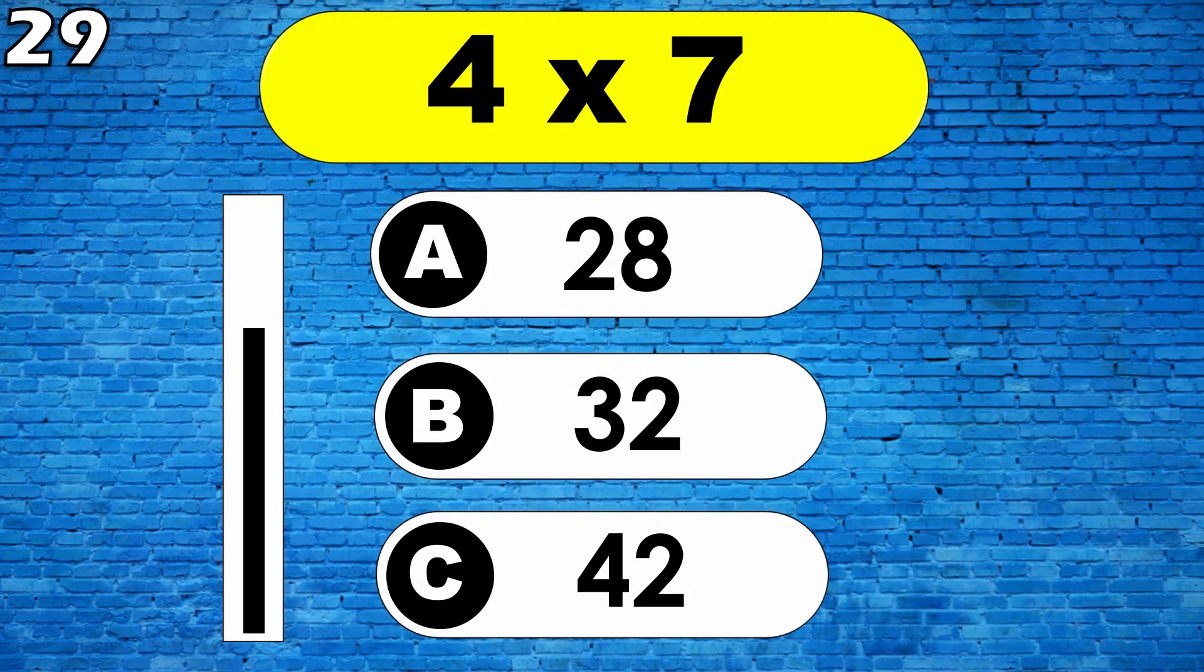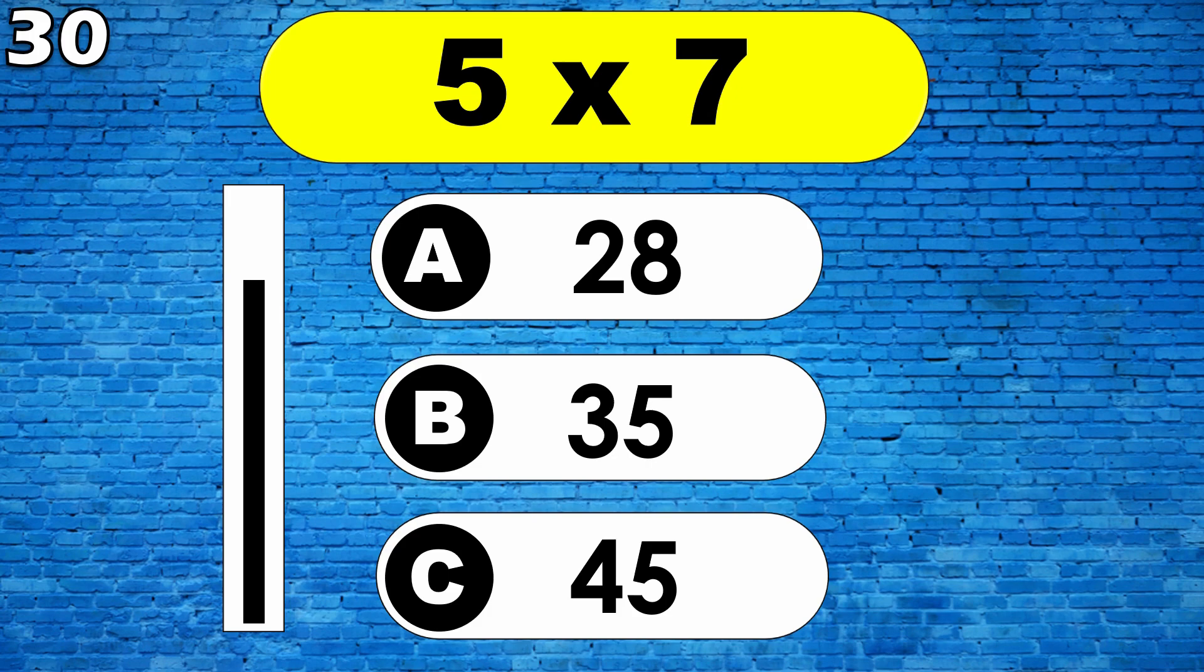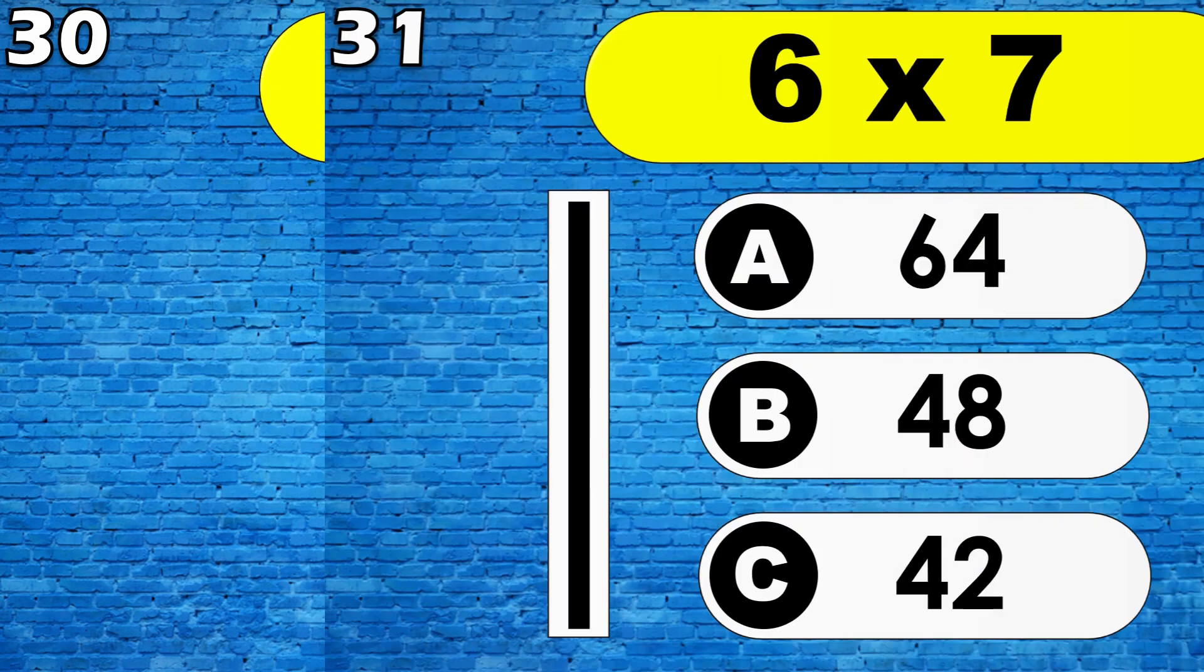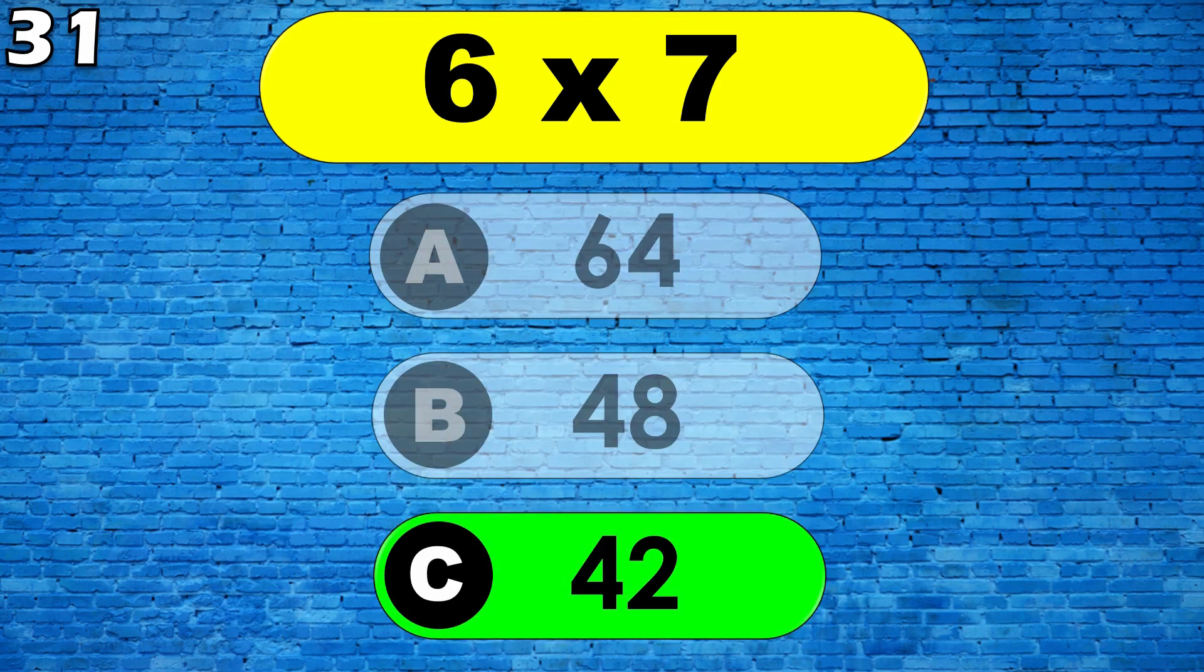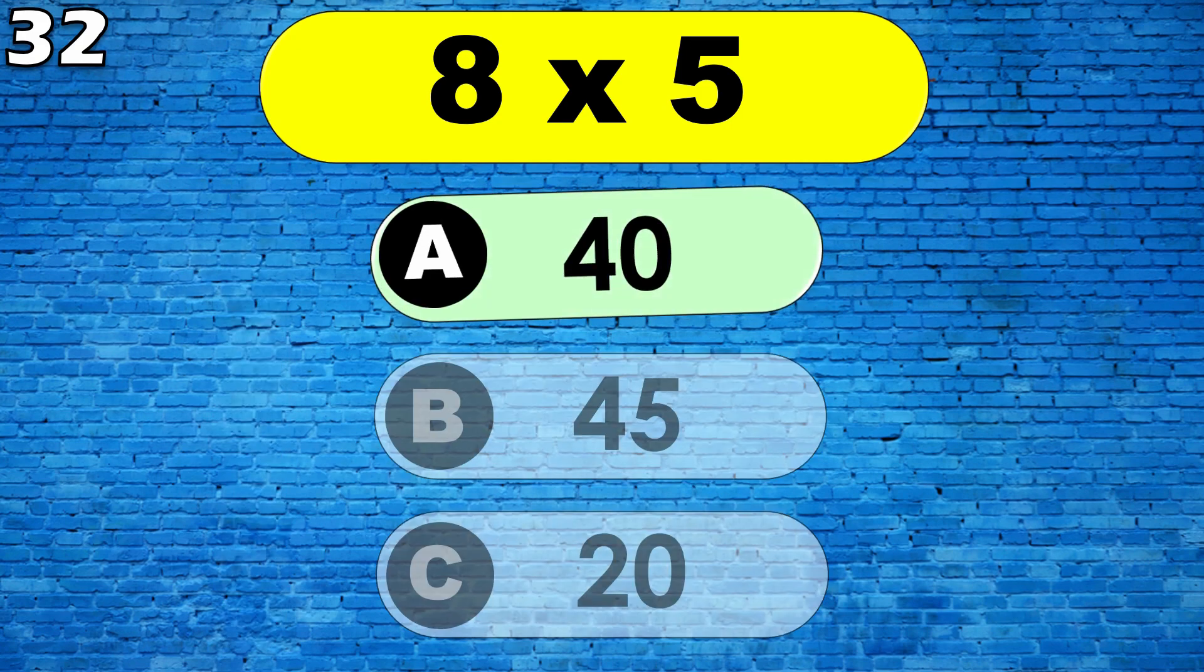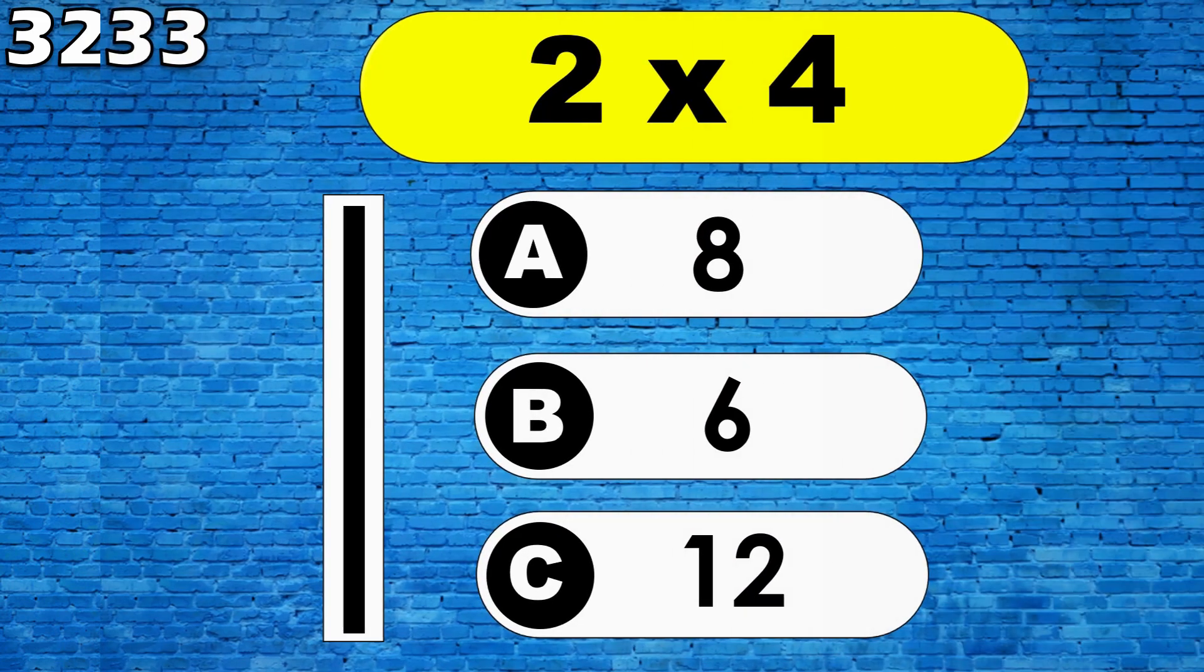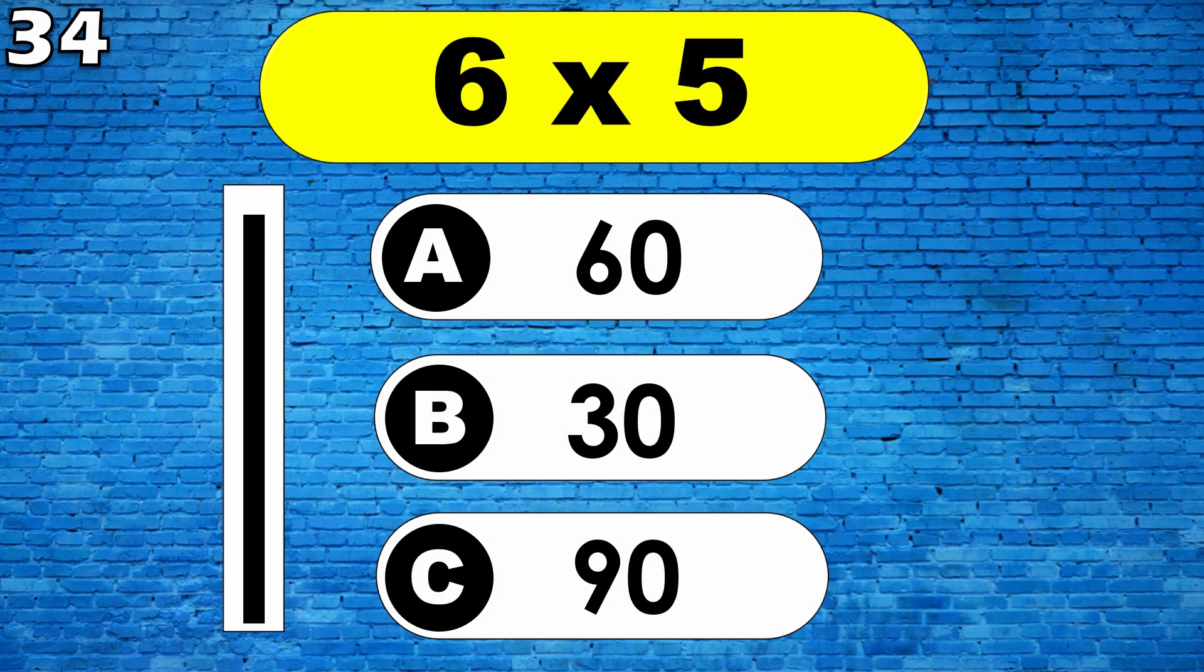Four sevens are twenty-eight. Five sevens are thirty-five. Six sevens are forty-two. Eight fives are forty. Six fives are thirty.